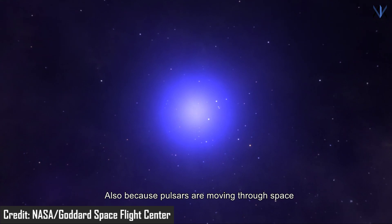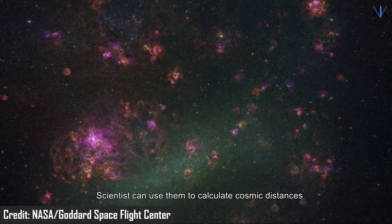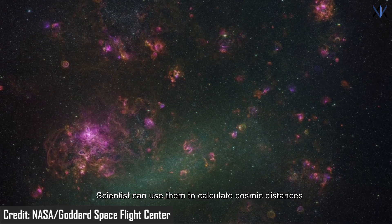Also, because pulsars are moving through space while blinking at a regular number of times, scientists can use them to calculate cosmic distances.